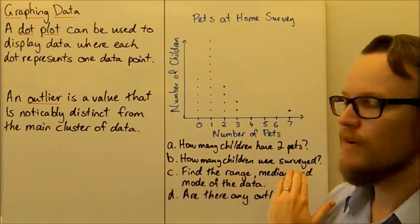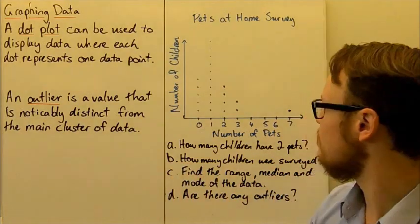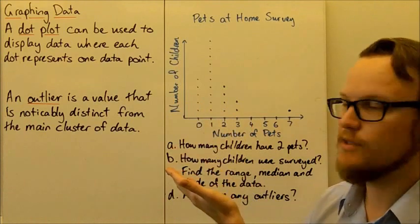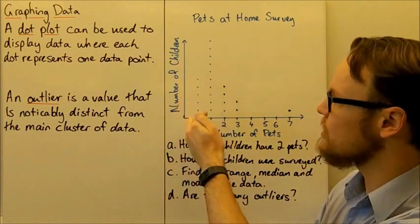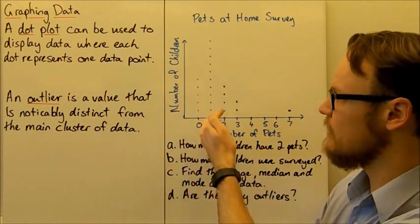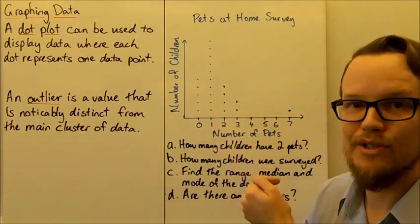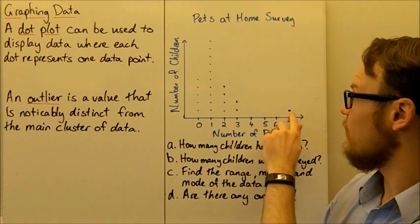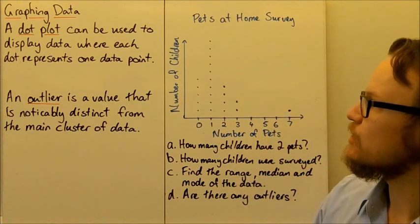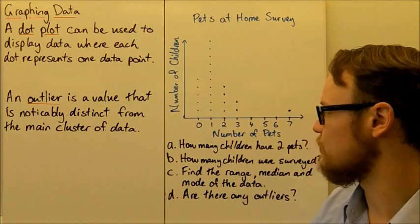Part B says how many children were surveyed. So in order to see how many children were surveyed in total, we need to count up all of the dots that we have. So we've got five dots here plus ten dots is 15, plus four dots is 19, plus another two dots is 21, and one last dot out here, 22. So 22 children were surveyed.